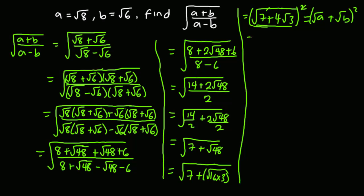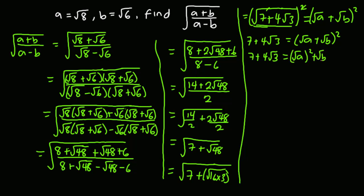Squaring both sides gives us: 7 + 4√3 equals (√a + √b)². Expanding the right side, (√a + √b)² gives a + b + 2√(ab). So 7 + 4√3 equals a + b + 2√(ab).